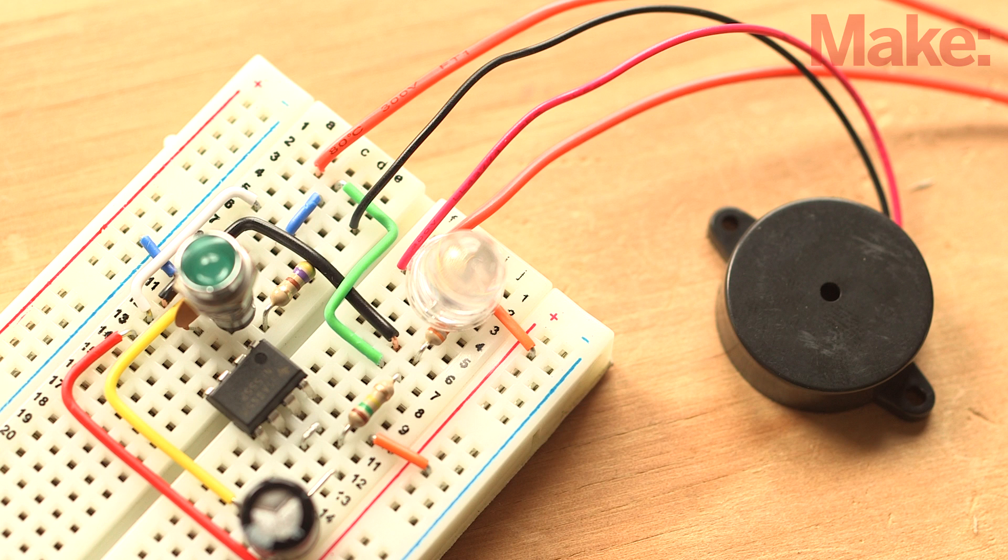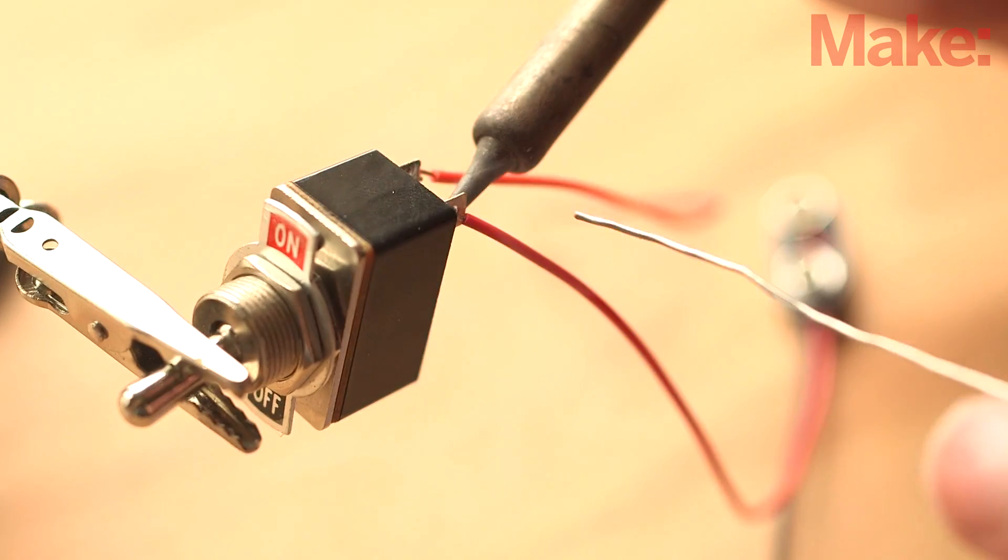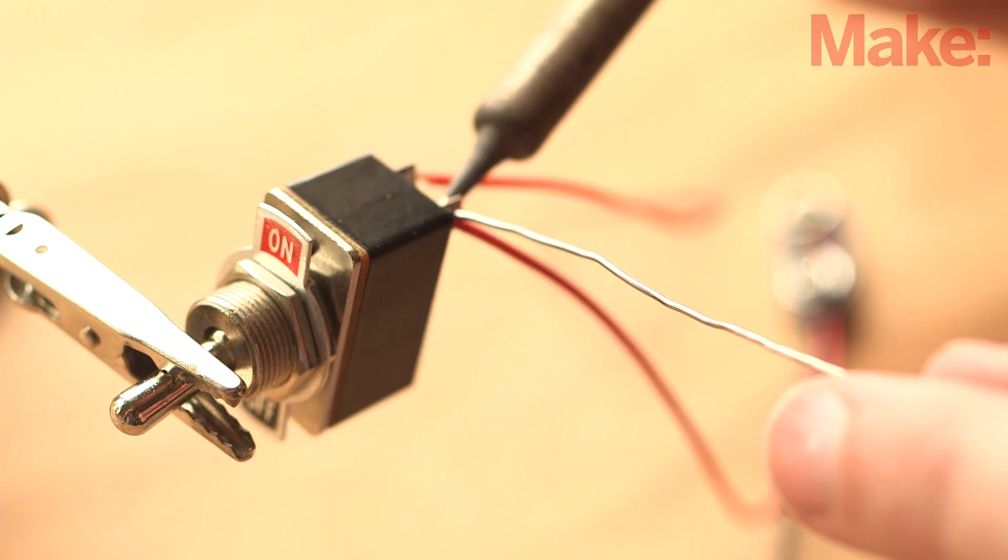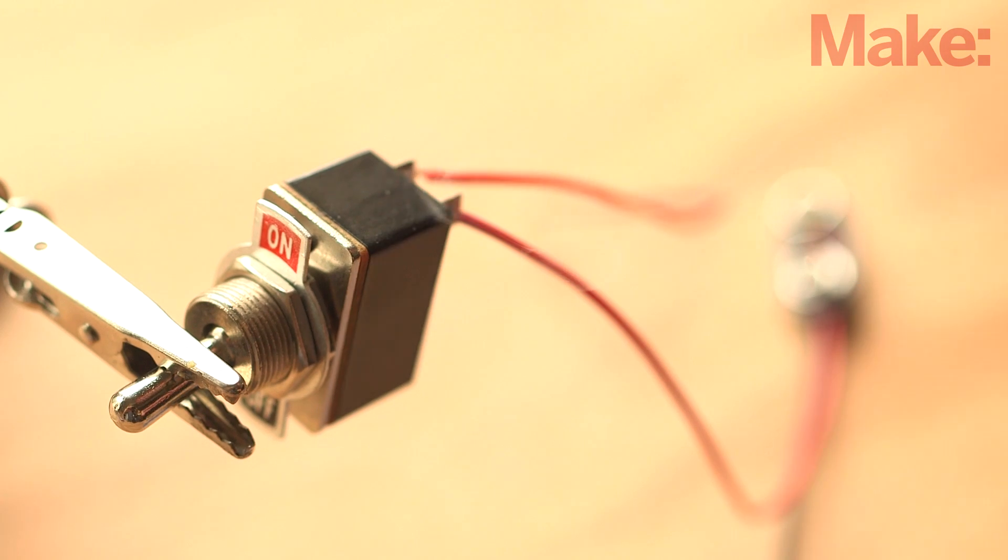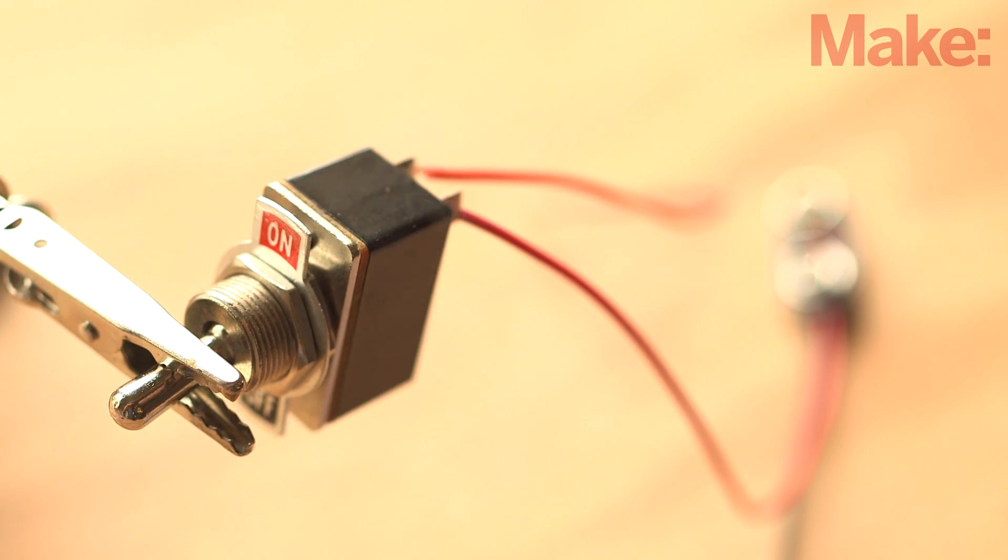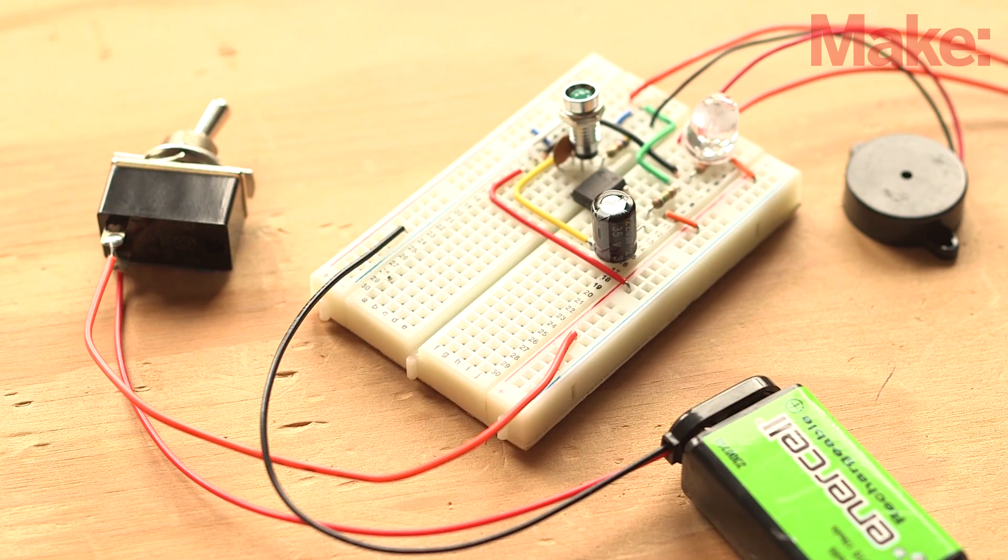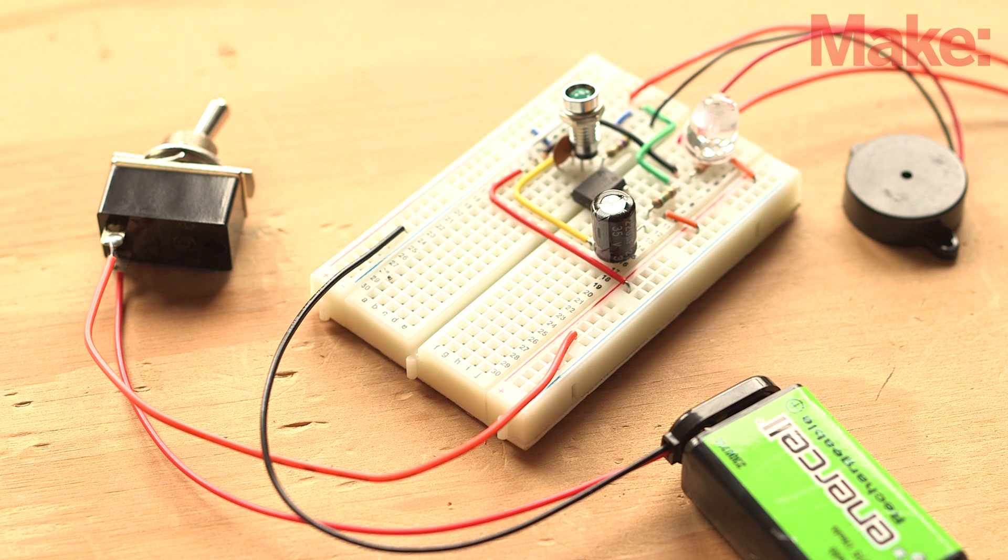The piezo already has wires, so simply plug it into the breadboard. Next, solder the battery holder's red wire to the switch and a length of wire to the other terminal of the switch. Now you can plug the battery's black wire and the length of wire from the switch into the breadboard.